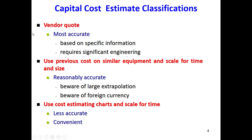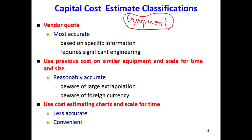For cost estimation, we can use different sources. Let's talk about the equipment we have in the plant — heat exchangers, heaters, reactors, distillation columns, and many other equipment. We need to find their cost.